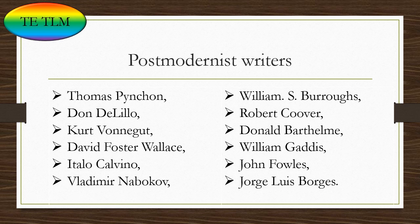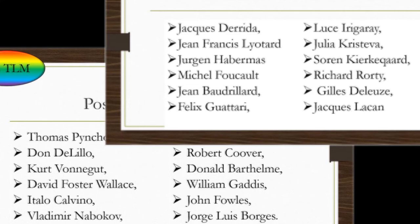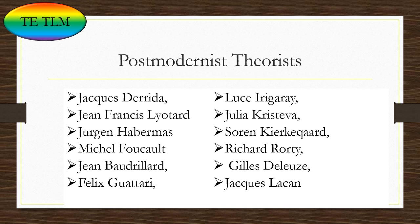Some popular postmodernist writers are Thomas Pynchon, Don DeLillo, Kurt Vonnegut, David Foster Wallace, Italo Calvino, and Vladimir Nabokov, among others. Famous postmodernist theorists include Jacques Derrida and Jean-François Lyotard, who explored grand narratives or meta-narrative forms — the idea that rational knowledge is not dependent on a particular culture but is totally value free.